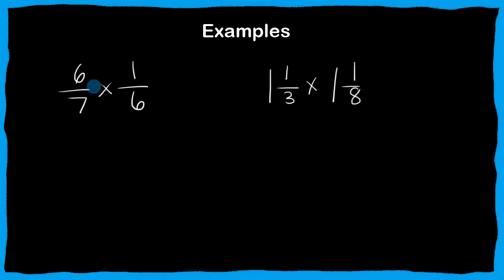Okay, let's work a couple more examples here. So, you can see here we have six-sevenths times one-sixth. We can reduce the six and the six. Six over six is just one over one, so we can reduce those by dividing both by six, and now we're just going to multiply one times one, and seven times one, and the answer is simply one-seventh.